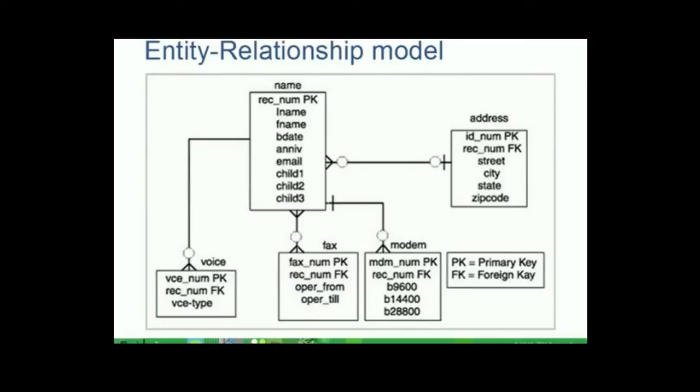In the mid-1970s, Peter Chen proposed the entity relationship data model. This was to be an alternative to the relational, codicil and hierarchical data models. He proposed thinking of a database as a collection of instances of entities. Rather than being used as a model on its own, the ER model has found success as a tool to design relational databases.